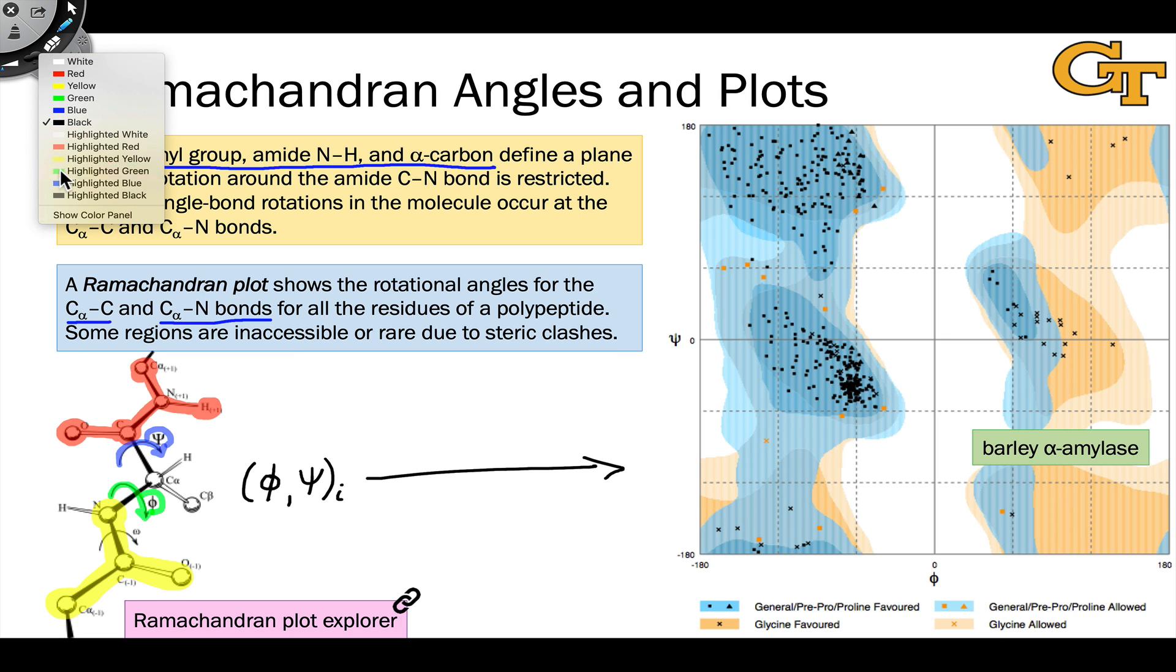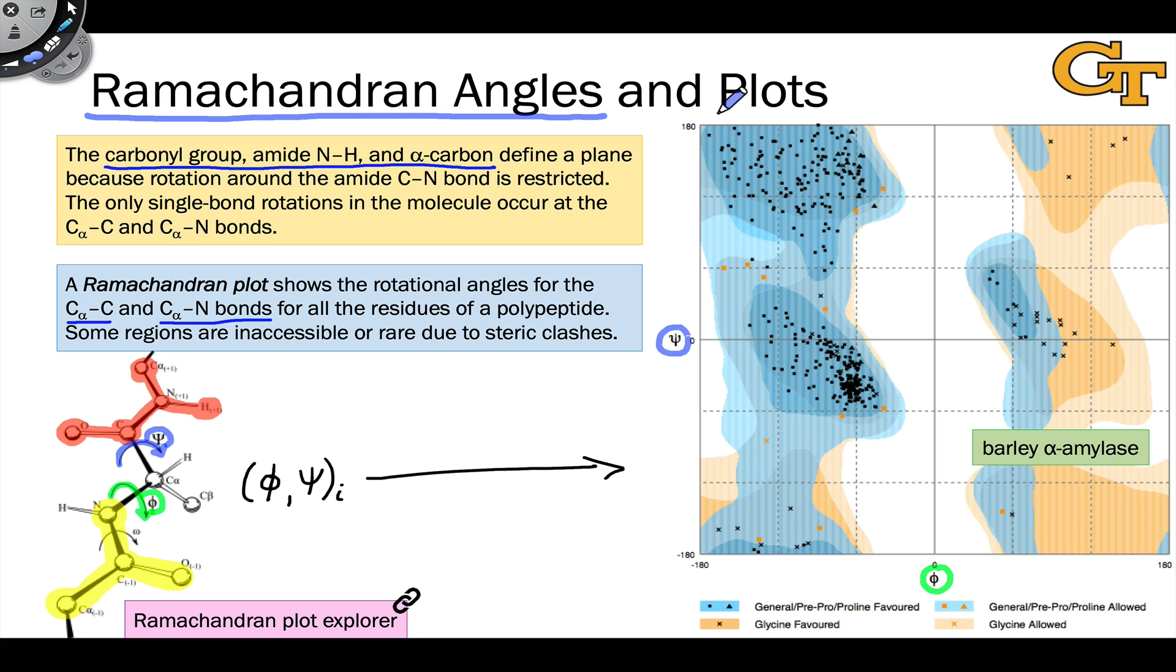Notice that we have on one axis the phi values, those are on the x-axis, and on the y-axis we have the psi values. This type of plot, which is a graphical representation of the three-dimensional shape or conformation of a protein, is called a Ramachandran plot, and these angles, phi and psi, are referred to as Ramachandran angles.